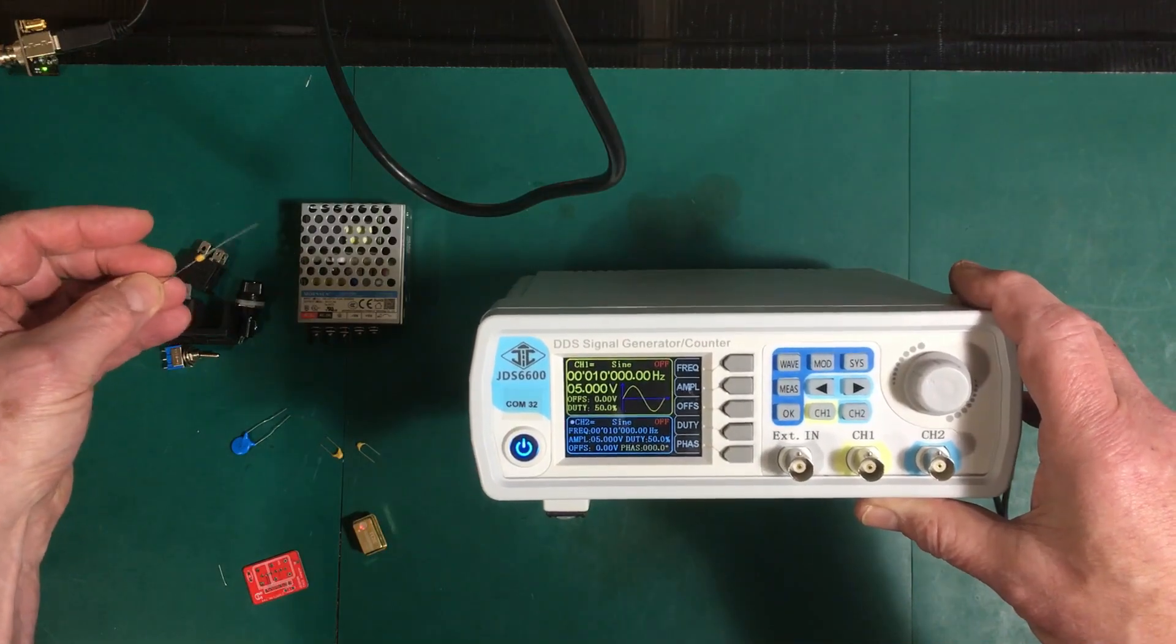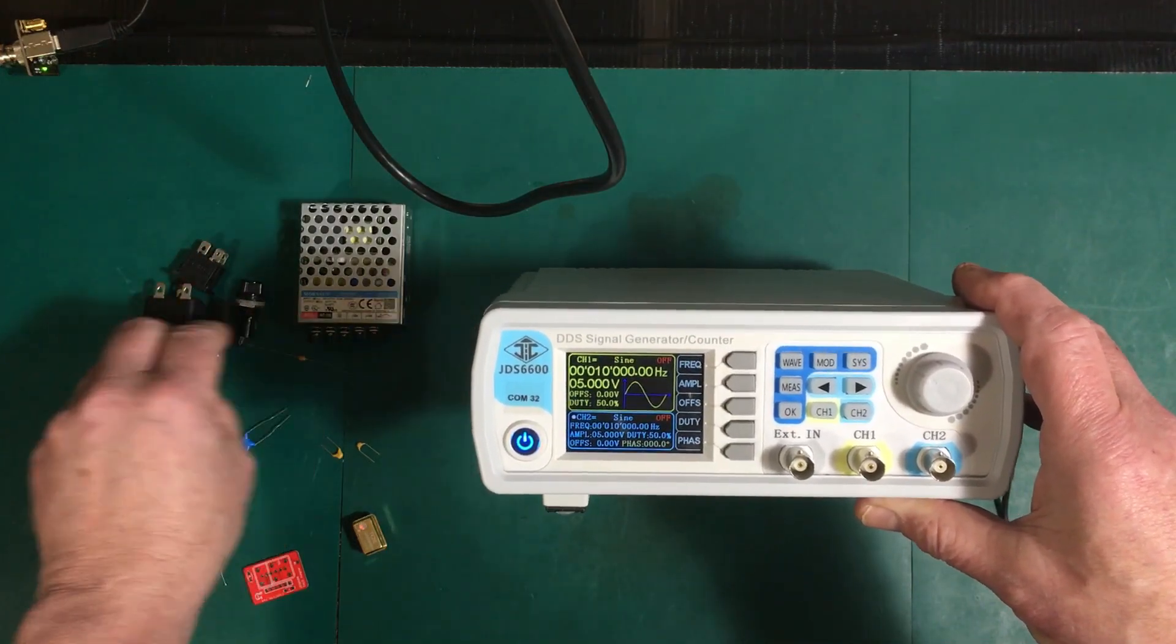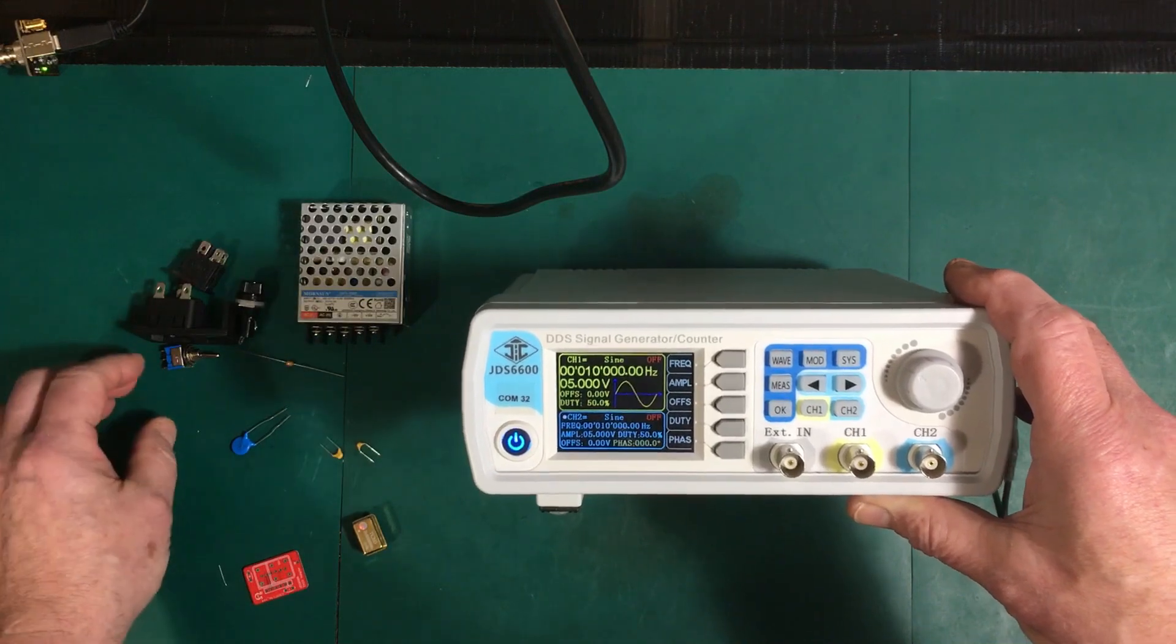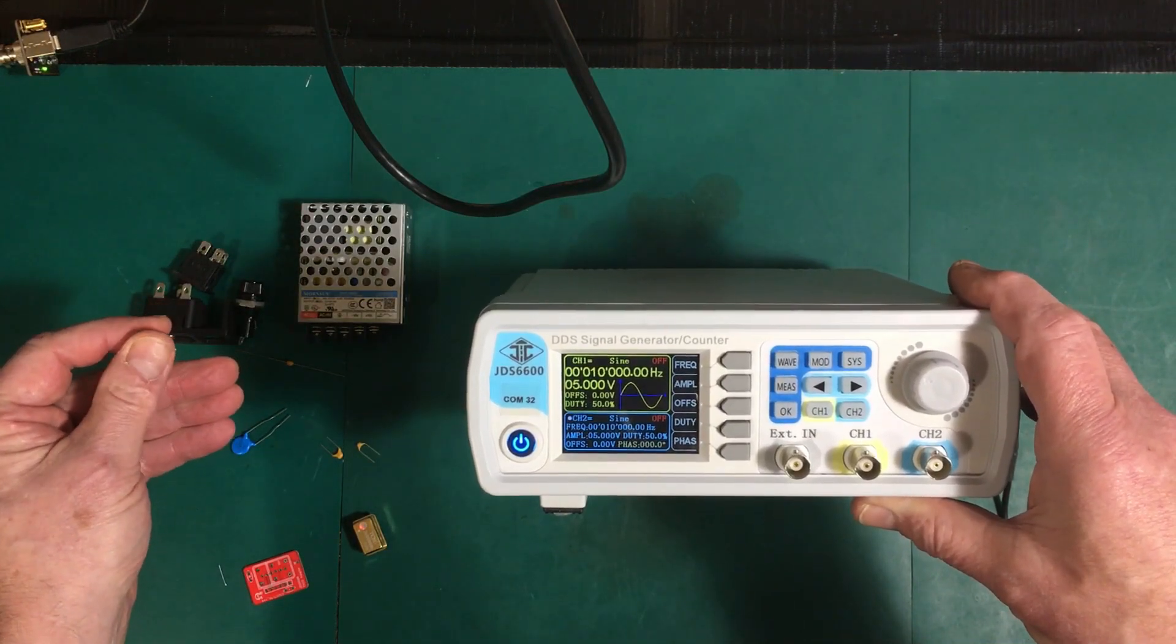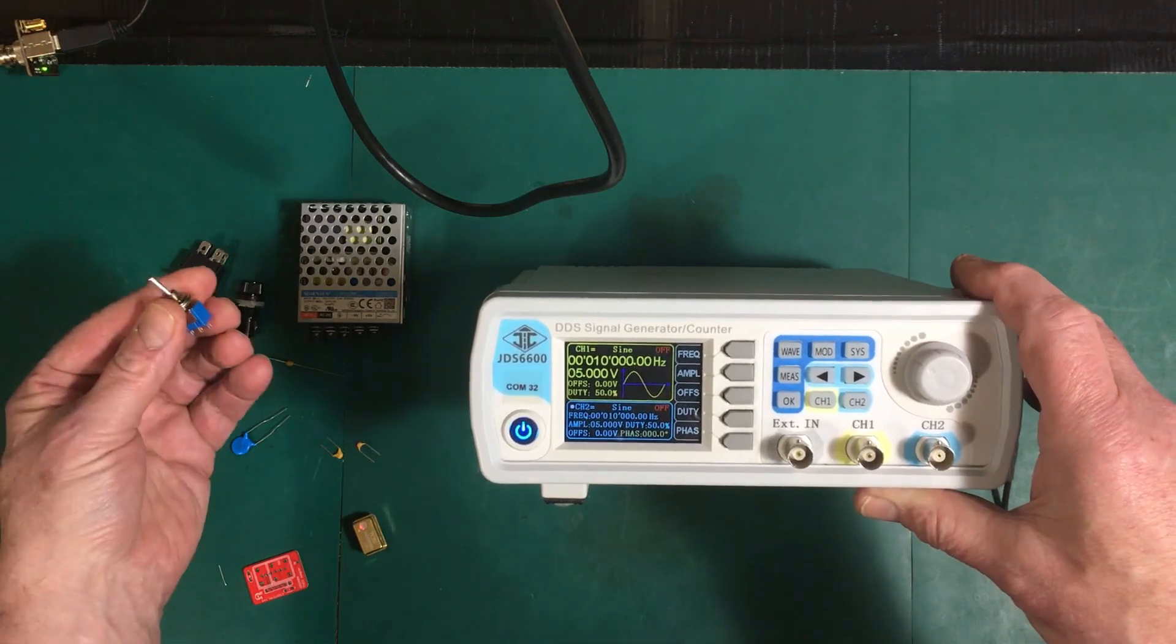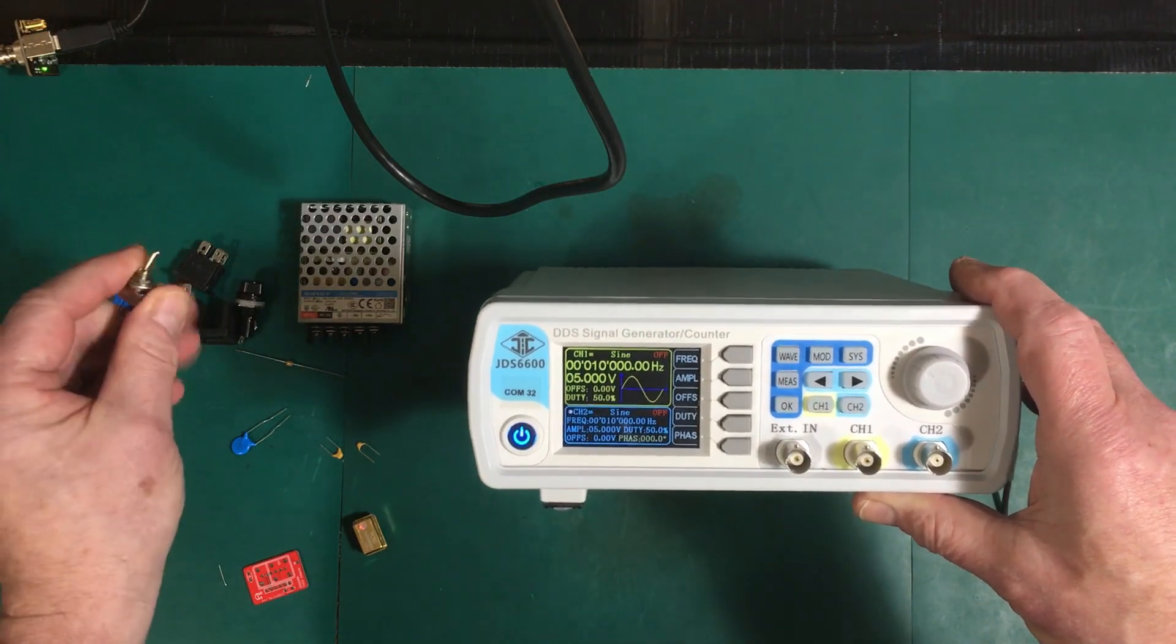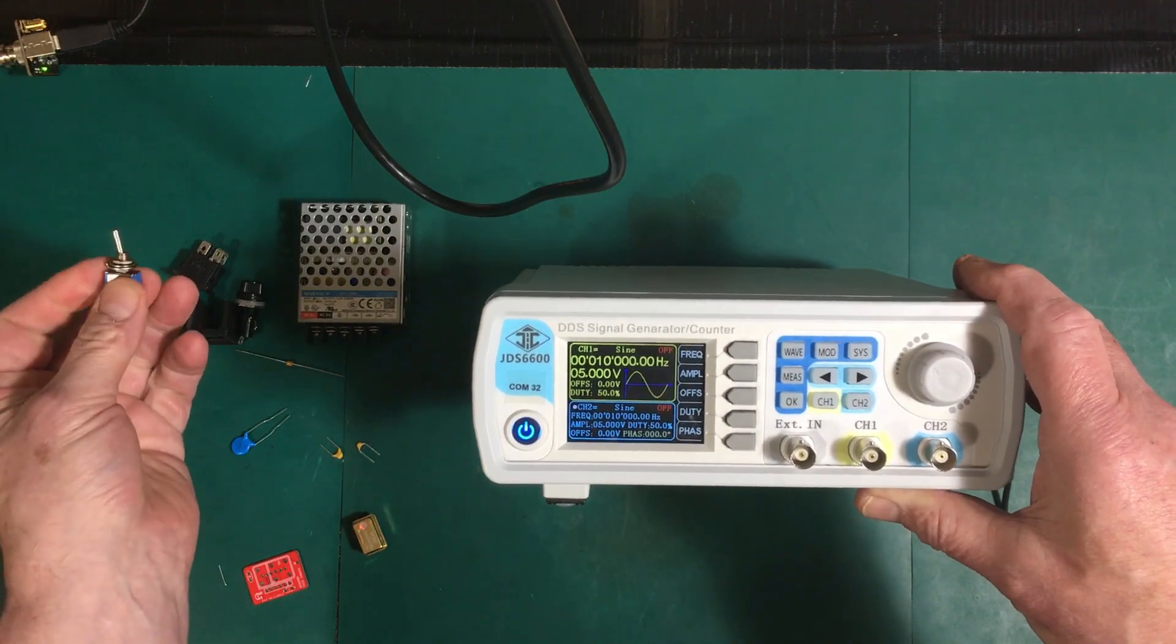This capacitor goes across the output for filtering. I'm going to put this switch in here to allow me to ground reference it, so I can have it floating or referenced to mains ground like most other function generators.